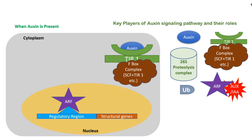Once the degradation of AUX/IAA is done, ARF becomes free. ARF travels into the nucleus as a transcription factor, binds to the regulatory region, and starts transcribing structural genes into mRNAs. These mRNAs are transported into the cytoplasm and translated into proteins which help the cell to grow and divide — which is the traditional trademark response of auxin hormone binding.